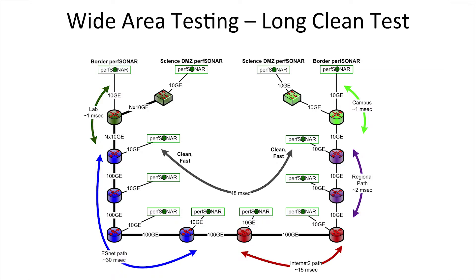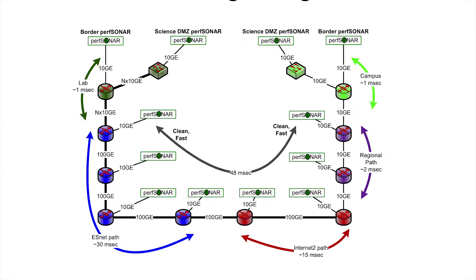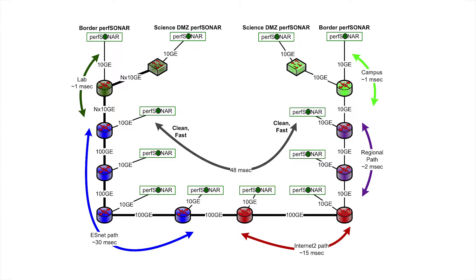If we look at what the path looks like in this case, we have a national laboratory connected to ESNet, ESNet is connected to Internet2, Internet2 is connected to a regional, the regional is connected to the campus. So we pick a pivot host in ESNet very close to the source, walk our way into ESNet and Internet2 and out through the regional, and we run the longest clean test that we can run. Turns out that the longest clean test goes all the way to the edge of the regional.